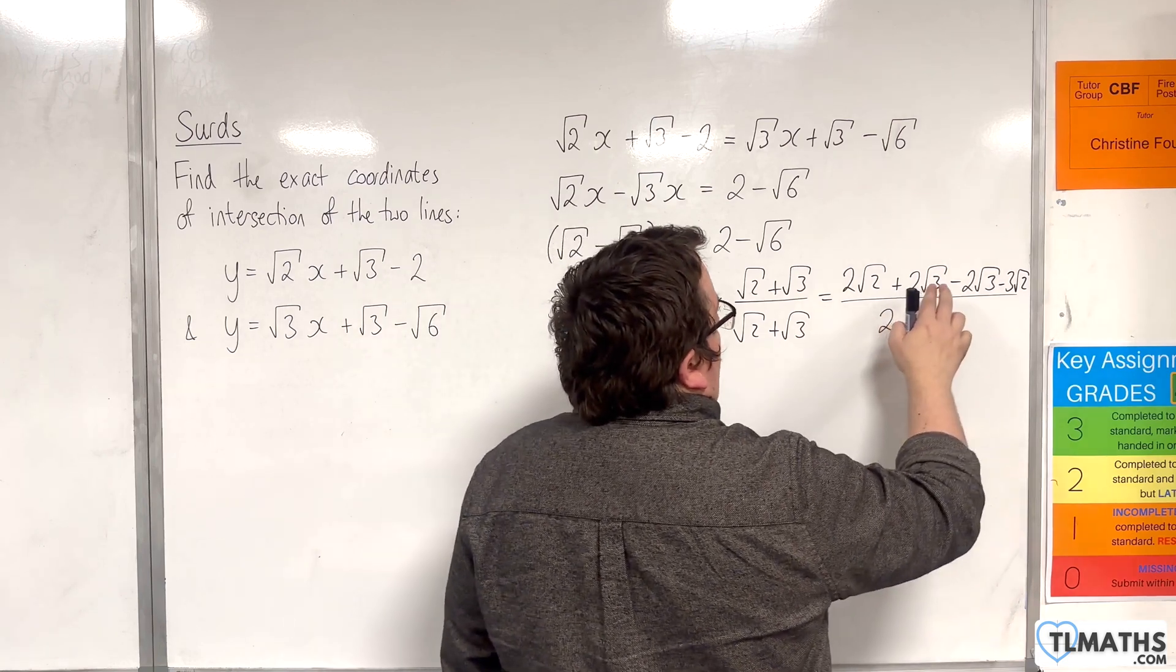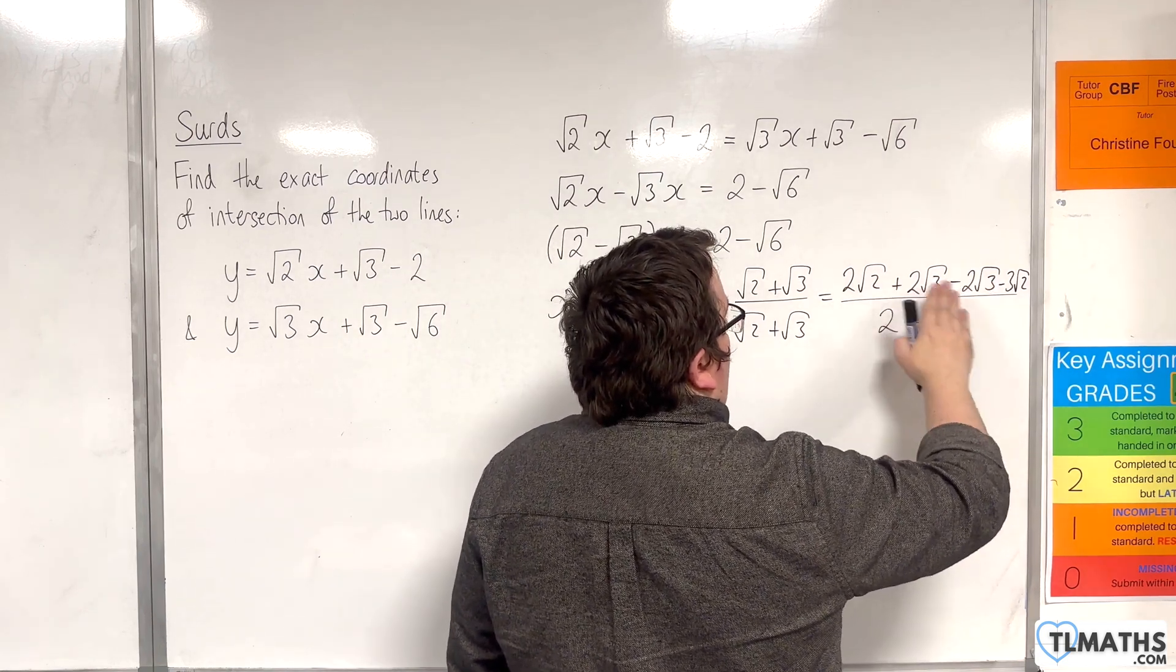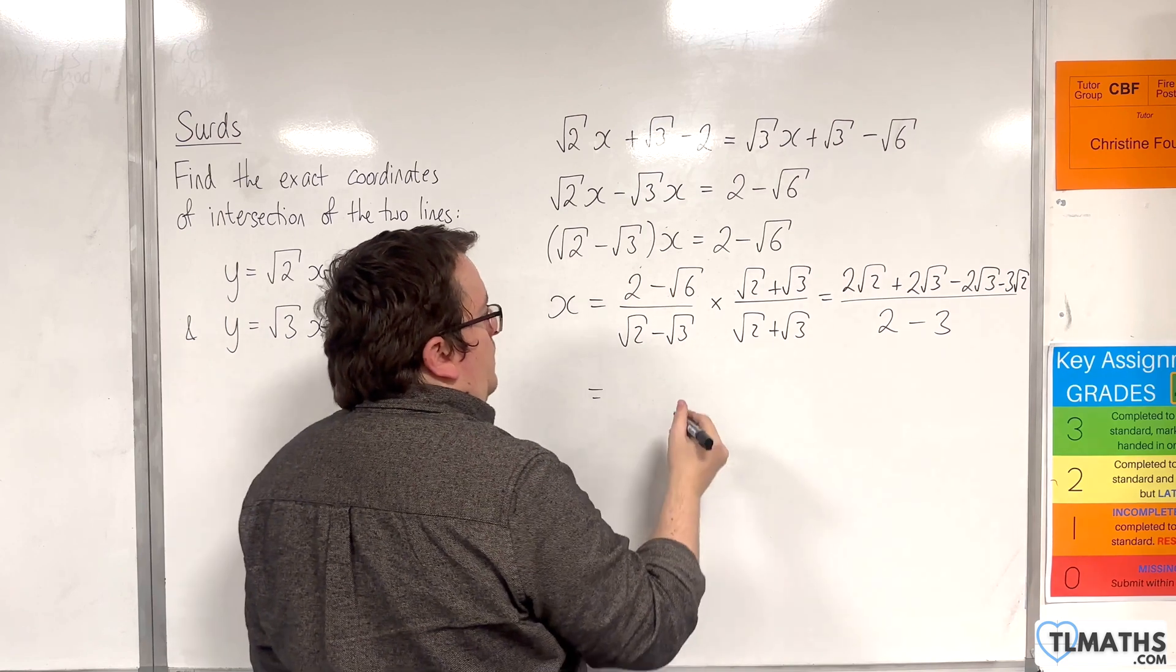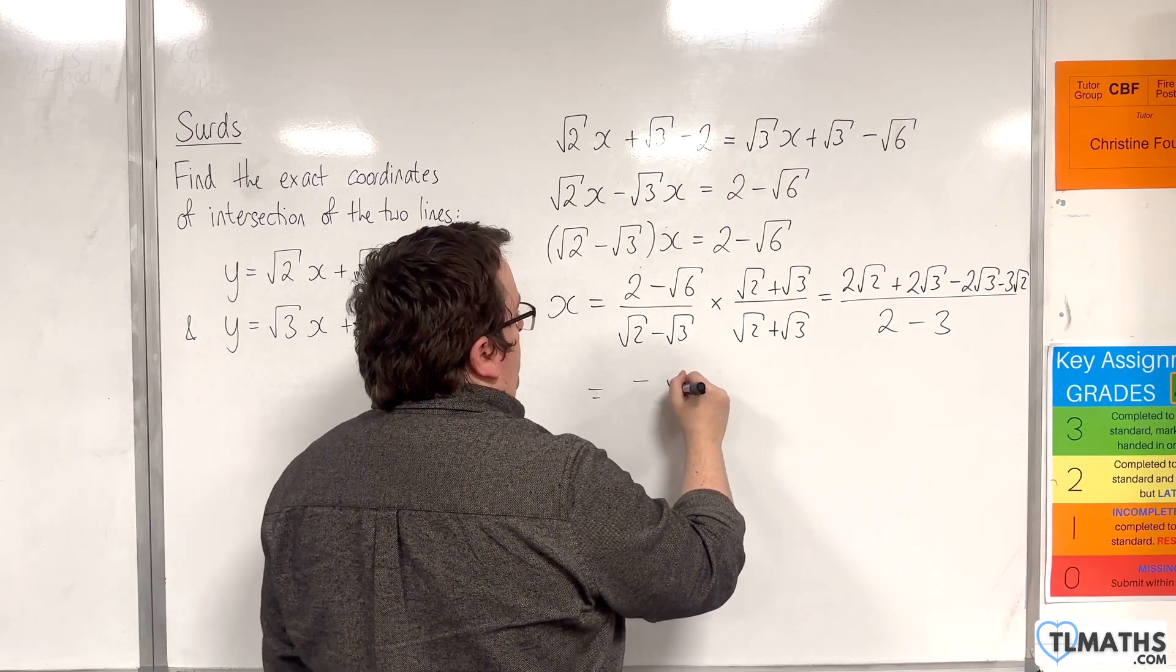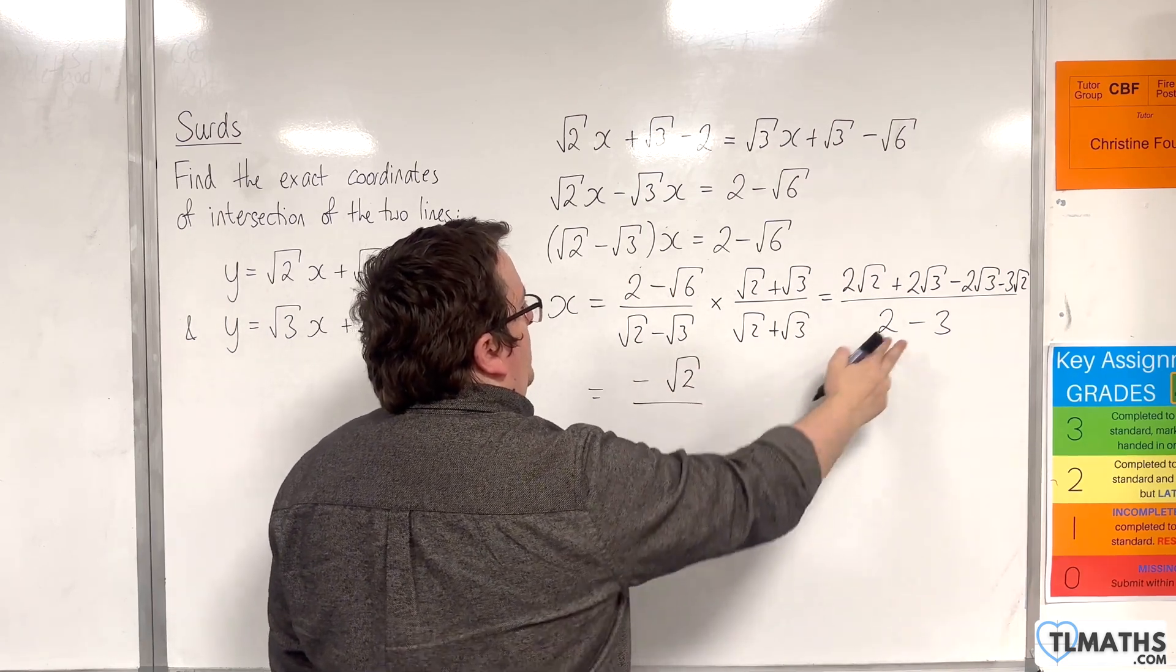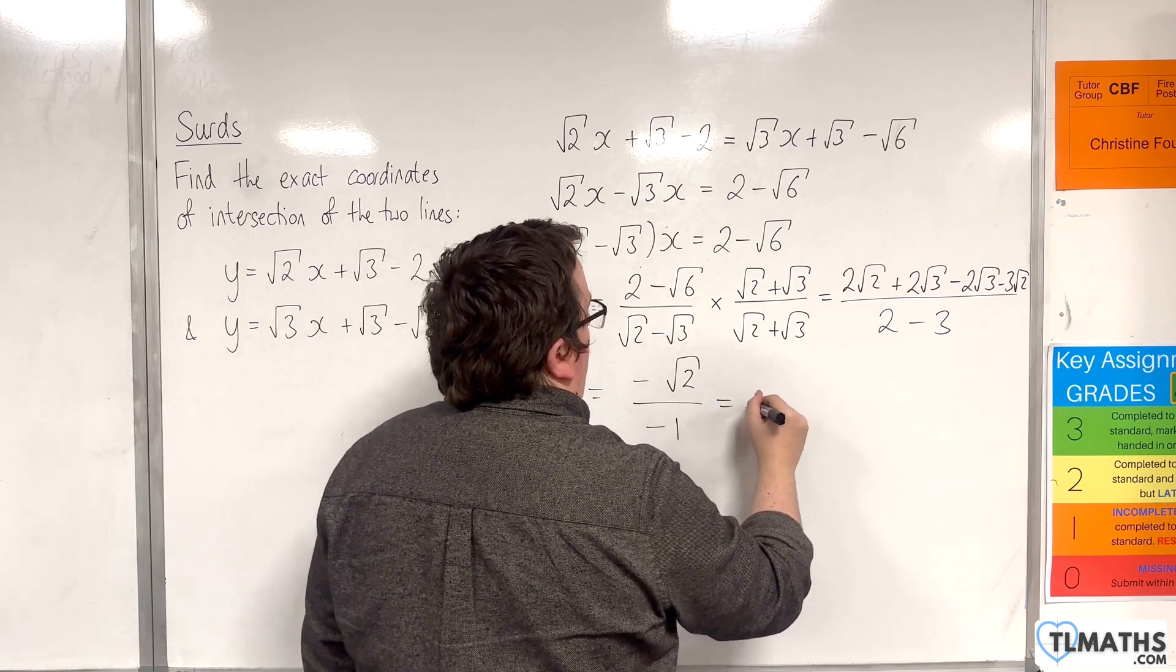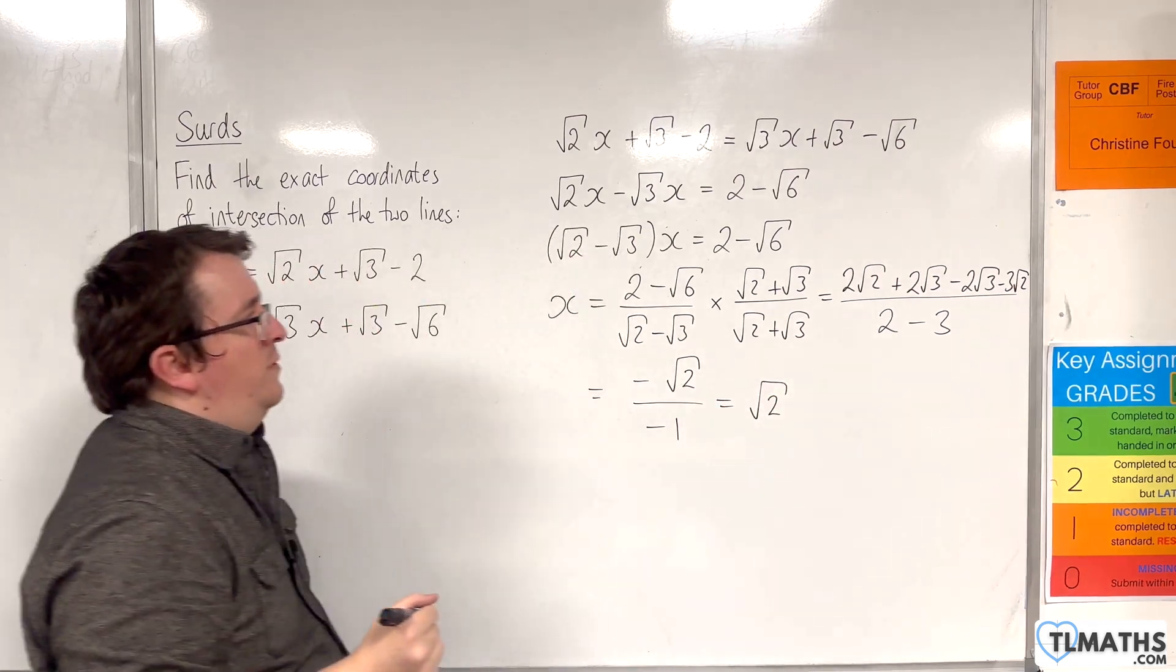So in the numerator, we've got 2 root 3 take away 2 root 3, they're gone. 2 root 2 take away 3 root 2 is minus root 2. And in the denominator, we've got minus 1. And so x has to be root 2.